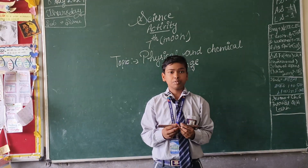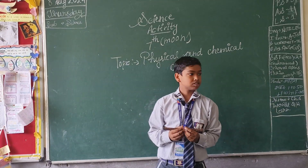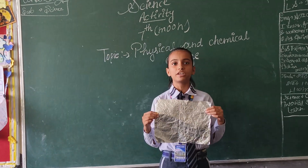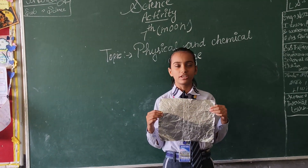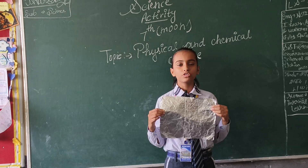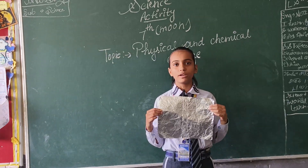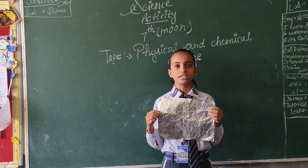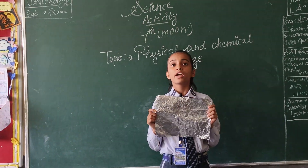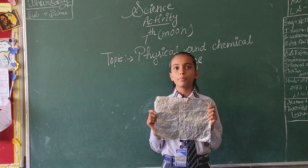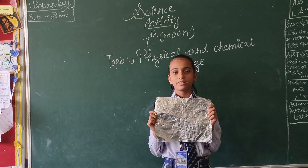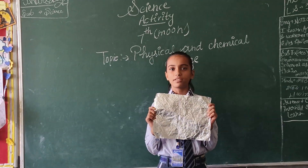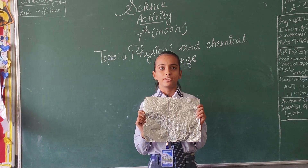Now I would like to call Dithi. When aluminium metal is beaten into a thin sheet, no new substance is formed — this is an example of physical change. When we paint the aluminium, there is no new substance formed, so it is a physical change.